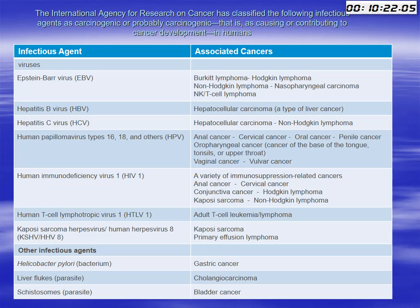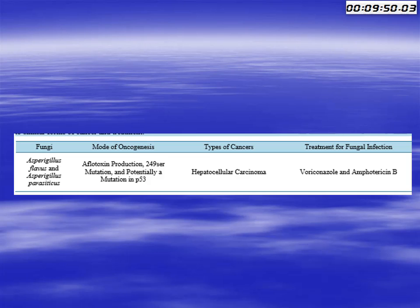HIV is implicated in a variety of immunosuppression-associated cancers such as anal cancer, cervical cancer, conjunctival cancer, Hodgkin's lymphoma, and Kaposi's sarcoma, and non-Hodgkin's lymphoma. Human T-lymphotropic virus is a cause of adult T-cell leukemia and Kaposi's sarcoma. Herpes virus is a cause of Kaposi's sarcoma and primary effusion lymphoma. H. pylori, a bacterium, is a causative agent of gastric cancer, and Schistosoma is a causative agent of bladder cancer. Finally, some fungi are now identified as causes of hepatocellular carcinoma, such as Aspergillus flavus and Aspergillus parasiticus, through the induction of aflatoxin production.